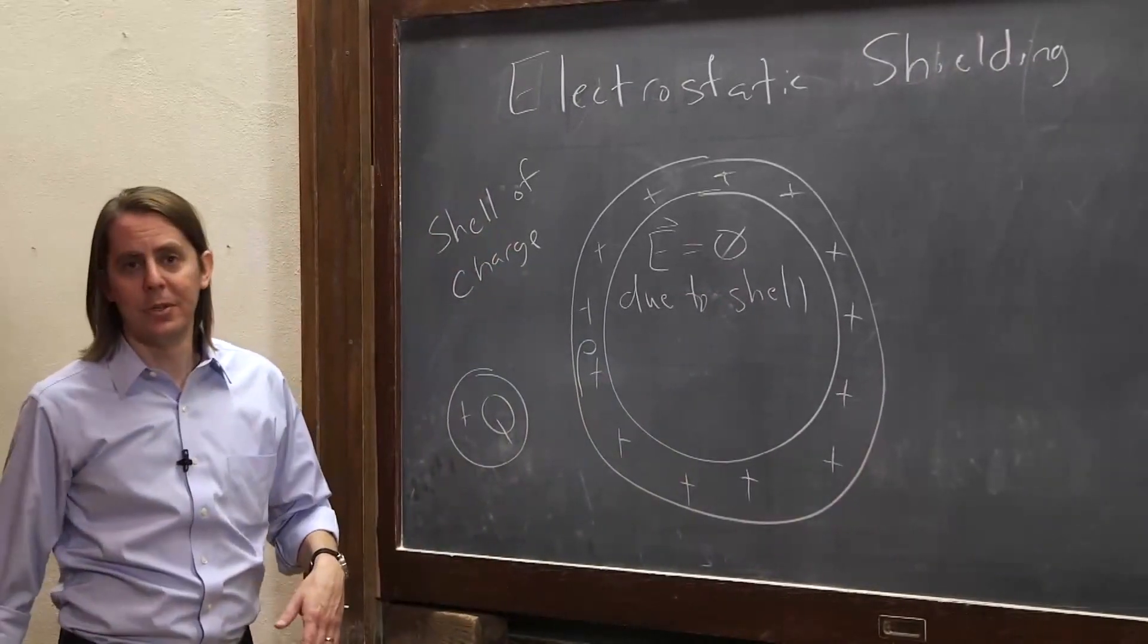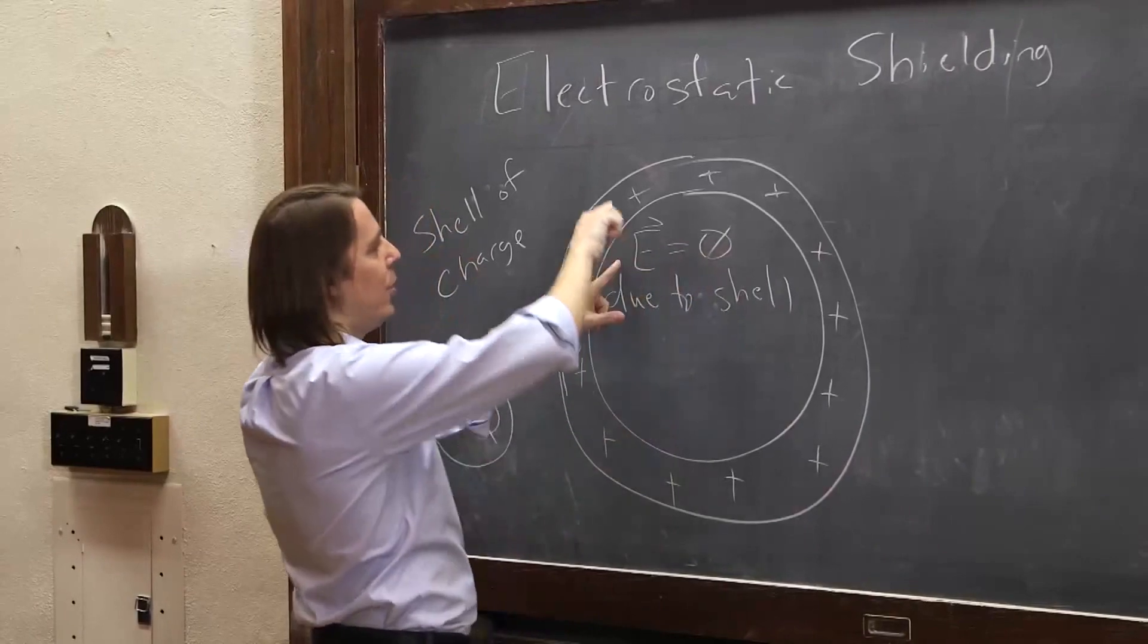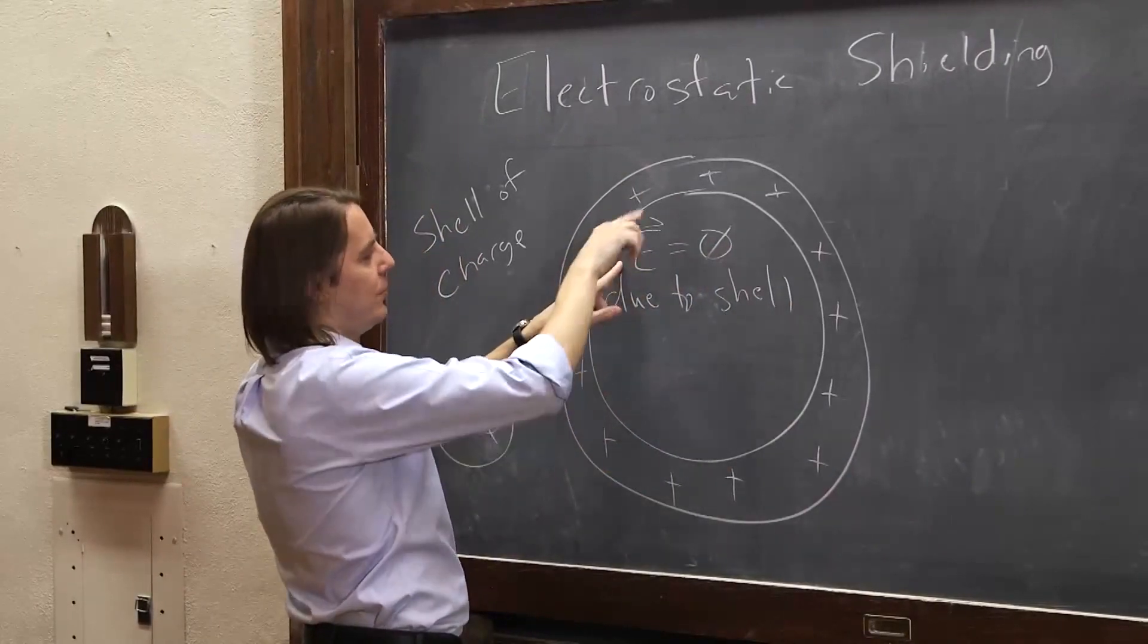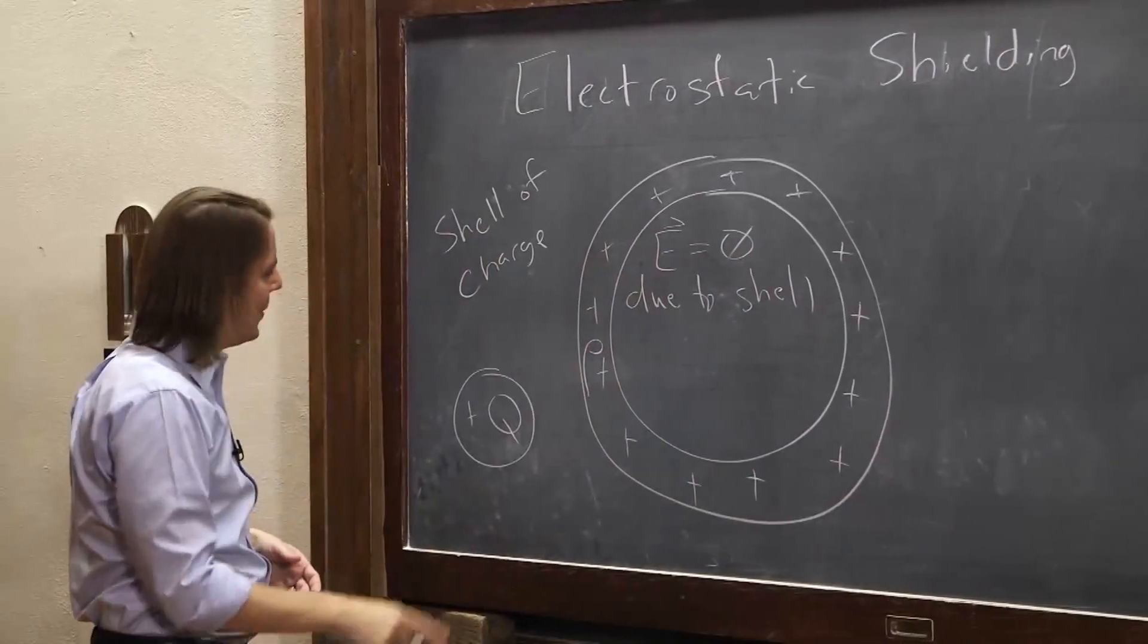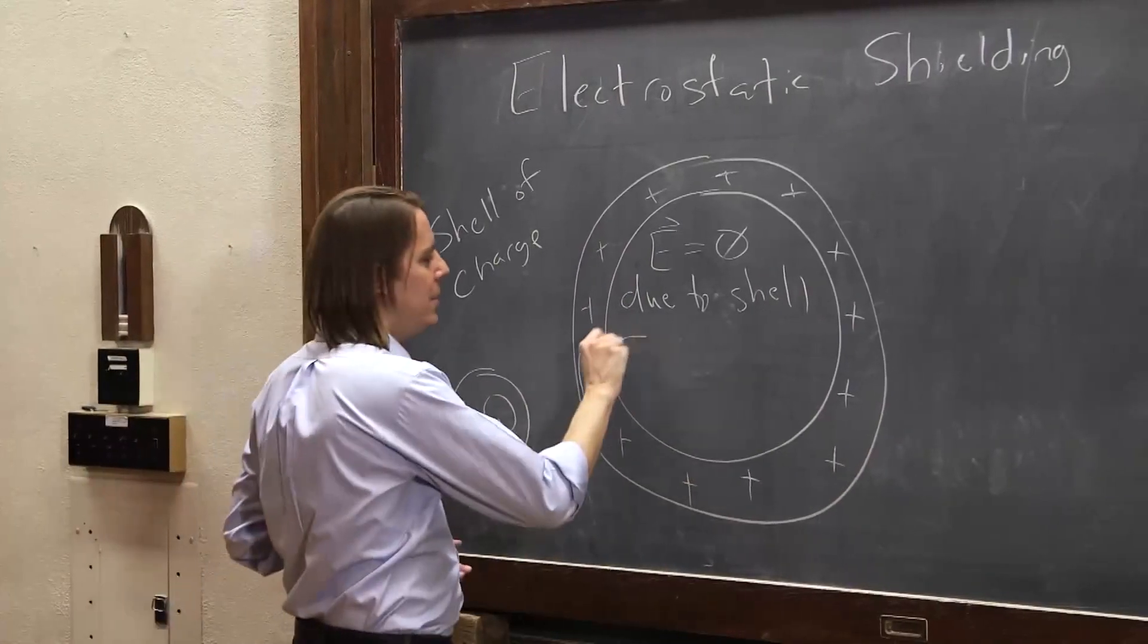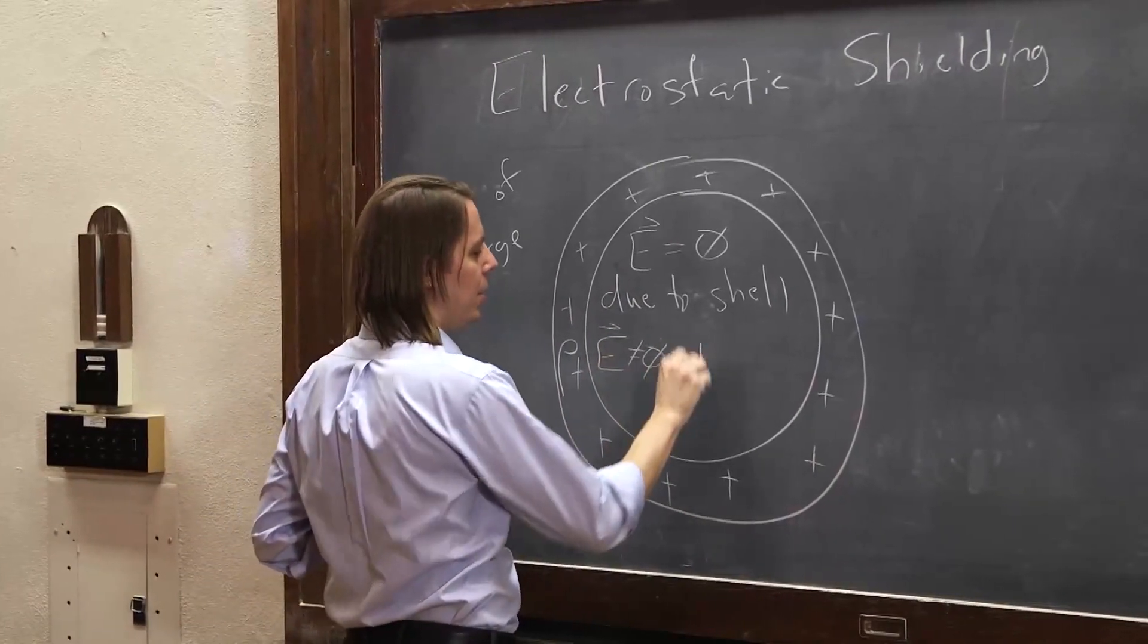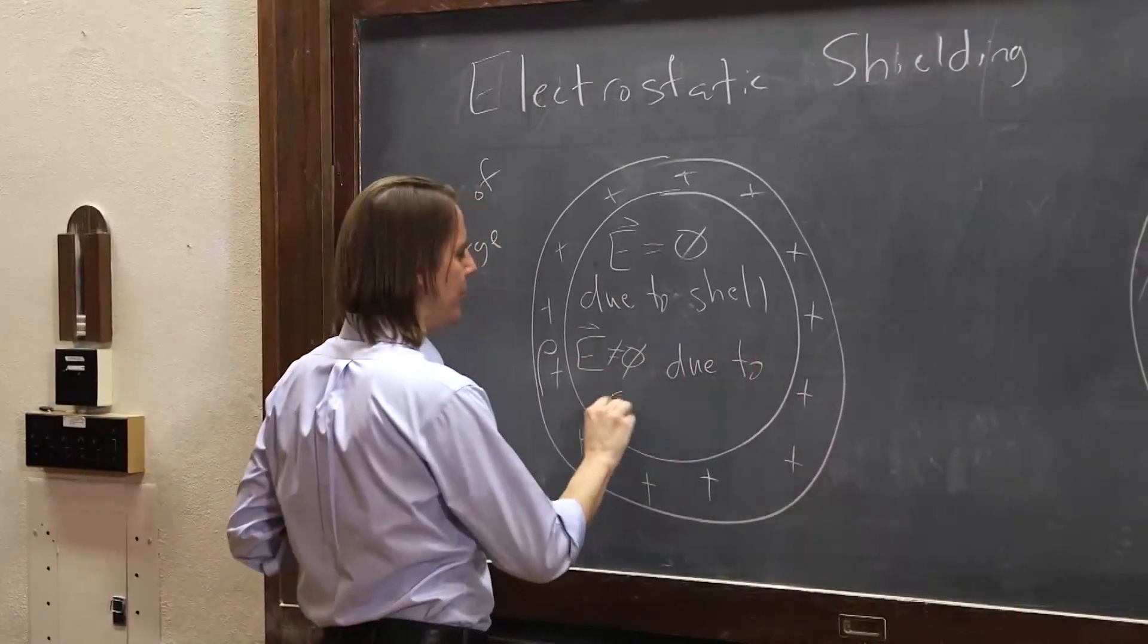And that's a Gauss's law problem that you'll probably do in the homework. You can show that the E field inside this thing is zero. All these charges make fields that cancel out. However, the field due to this will happily go in, because it's superposition. E inside here will not be zero due to superposition.